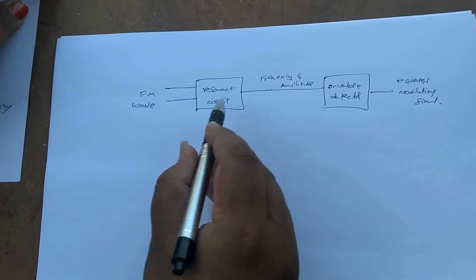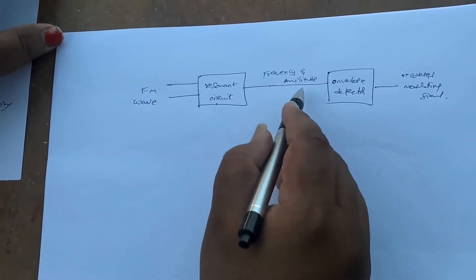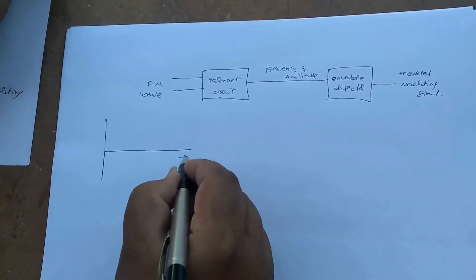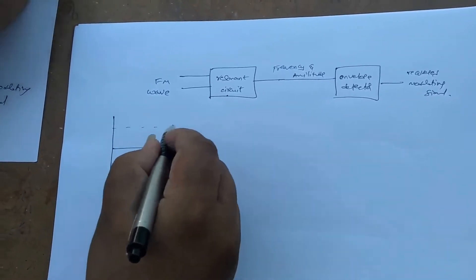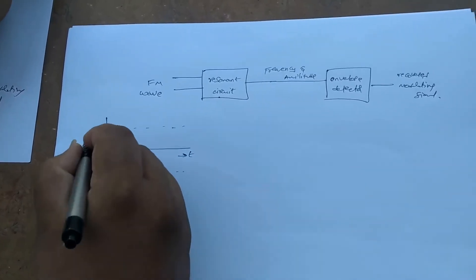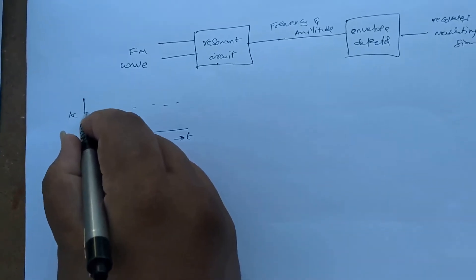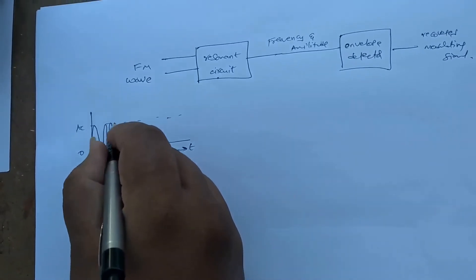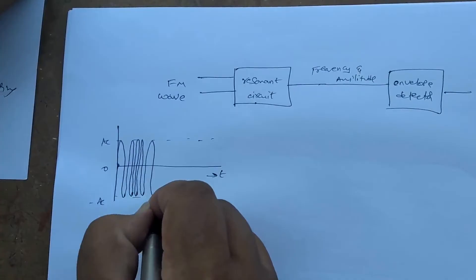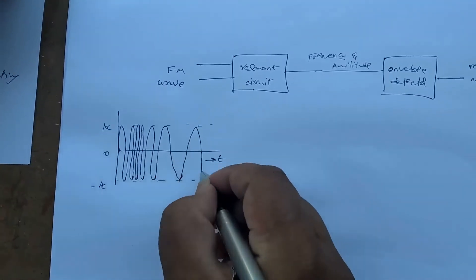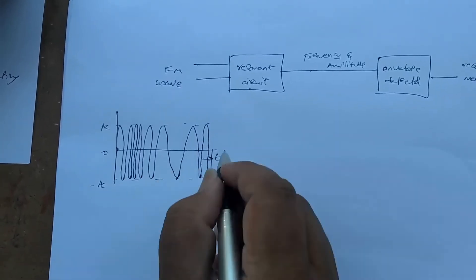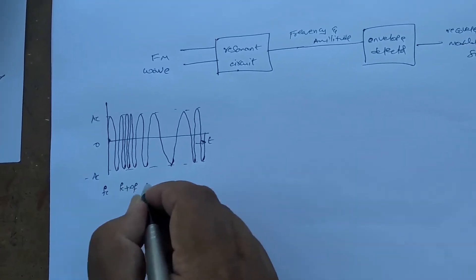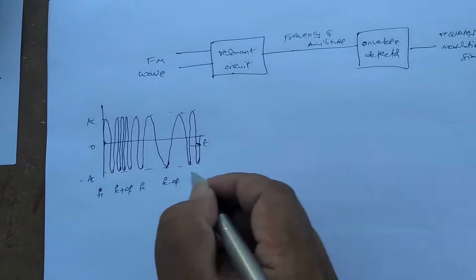Now, how does the resonant circuit convert the frequency modulated wave into a frequency and amplitude wave? For the FM wave, the amplitude remains constant. As the frequency increases, the time period decreases. The frequency varies as: Fc, then Fc plus delta F, then back to Fc, then Fc minus delta F, and again Fc. So the modulating signal causes these frequency variations in the FM wave.